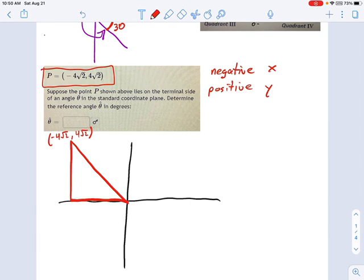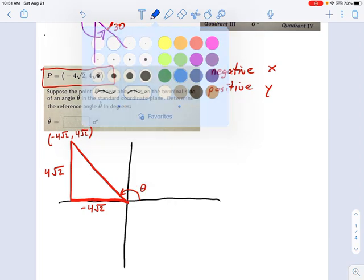And just like before, it's useful if you label the sides of this triangle. You can use the x coordinate to label the x side. That's right here. -4√2. And the y coordinate to label the y side. Positive 4√2. Here's my angle, theta. And the reference angle that I'm looking for,